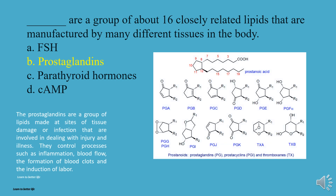Prostaglandins are a group of lipids made at sites of tissue damage or infection that are involved in dealing with injury and illness. They control processes such as inflammation, blood flow, the formation of blood clots, and the induction of labor.